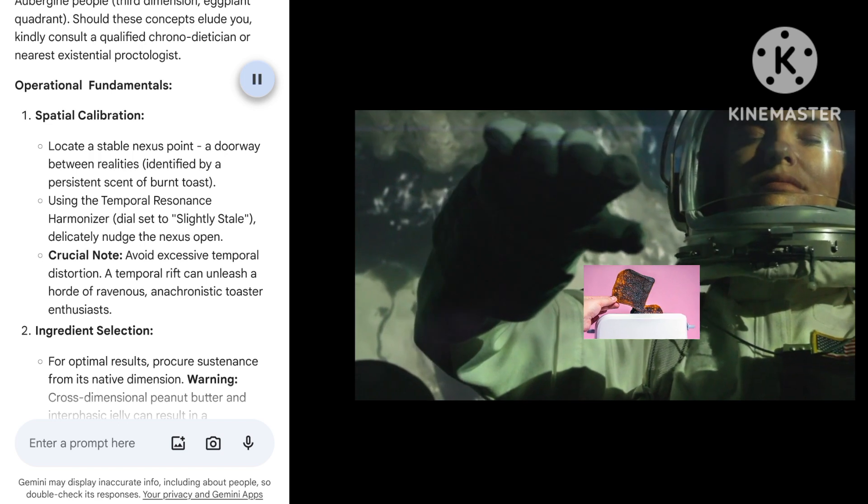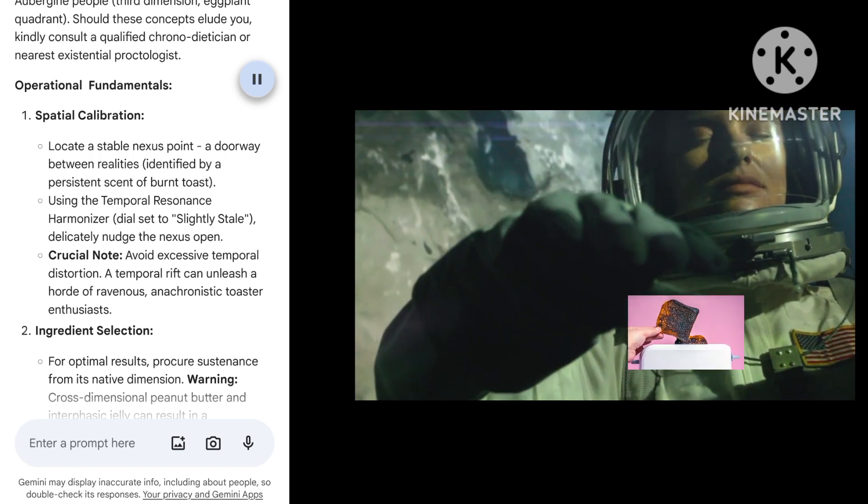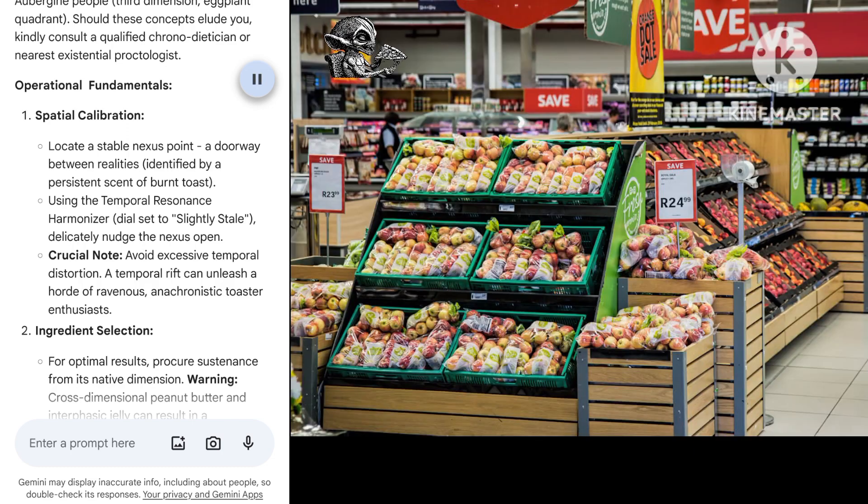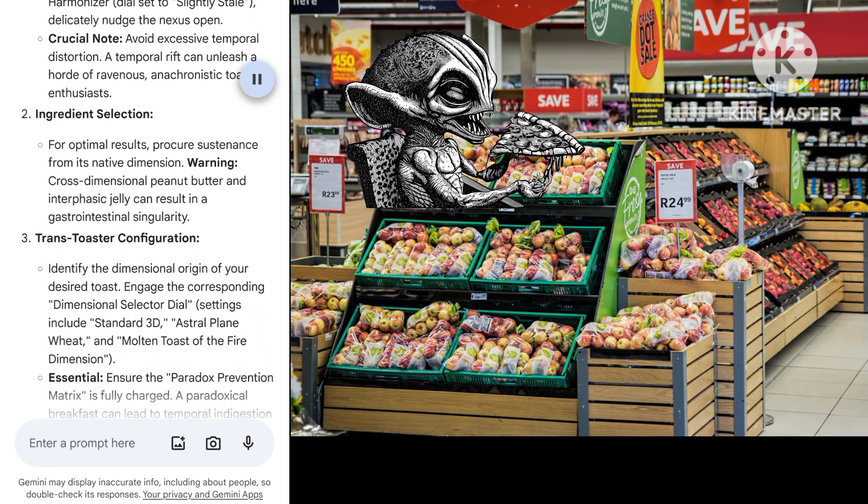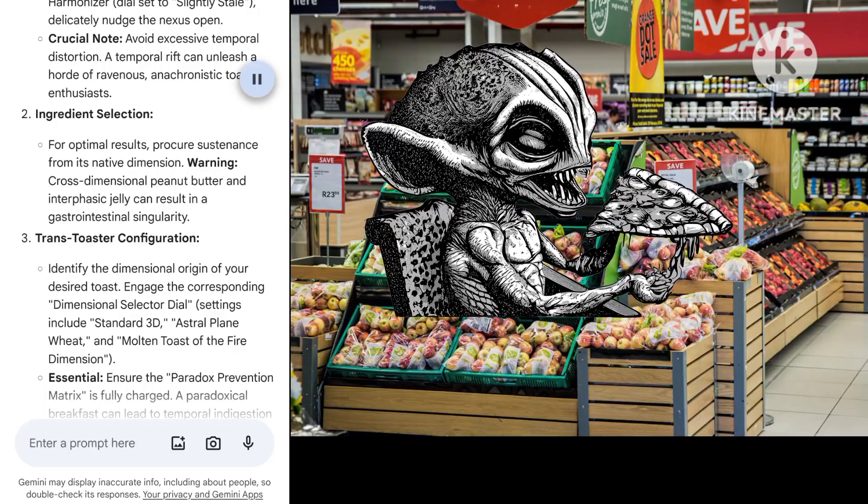Crucial Note: Avoid excessive temporal distortion. A temporal rift can unleash a horde of ravenous anachronistic toaster enthusiasts. 2. Ingredient Selection: For optimal results, procure sustenance from its native dimension. Warning: Cross-dimensional peanut butter and interphasic jelly can result in a gastrointestinal singularity.